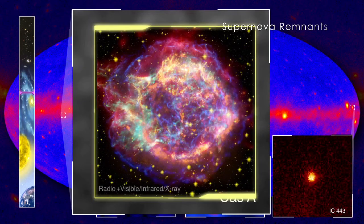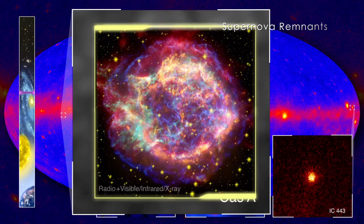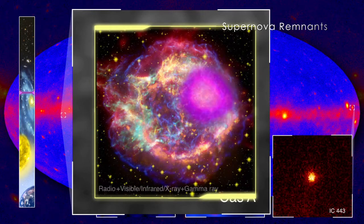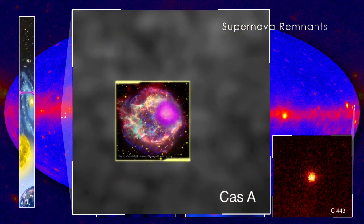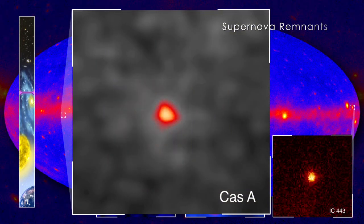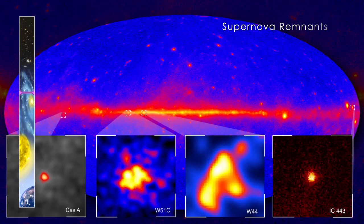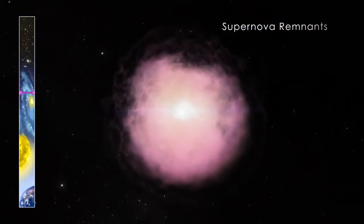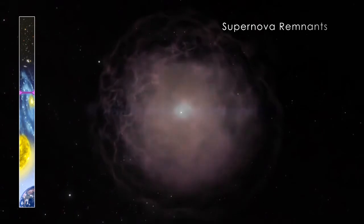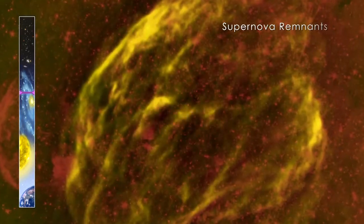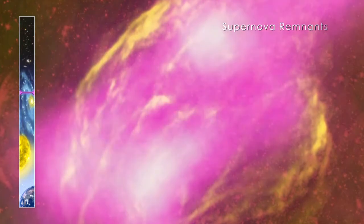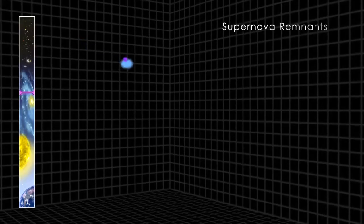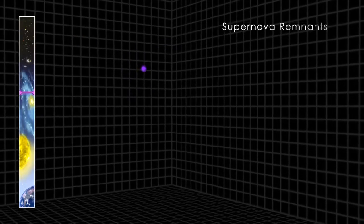New images show where supernova remnants emit gamma rays a billion times more energetic than visible light. This glow suggests that the remnants are a source of cosmic rays, protons and electrons accelerated to near light speed. Observations of two supernova remnants by NASA's Fermi Gamma-ray Space Telescope conclusively show these supernova remnants are accelerating protons. When they strike protons in nearby molecular clouds, they produce the gamma-ray emission Fermi sees.